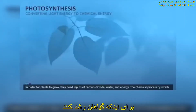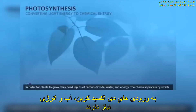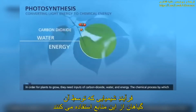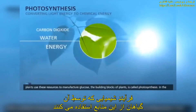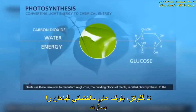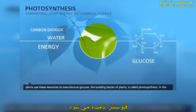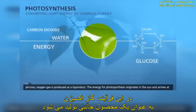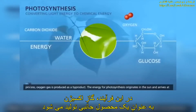In order for plants to grow, they need inputs of carbon dioxide, water, and energy. The chemical process by which plants use these resources to manufacture glucose, the building blocks of plants, is called photosynthesis. In the process, oxygen gas is produced as a byproduct.